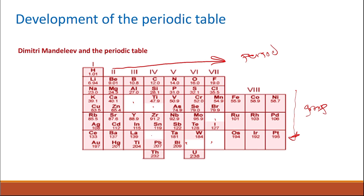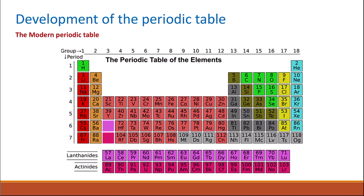When new elements were discovered, they fitted well into the gaps that Mendeleev had left in his table. The discovery of isotopes in the early 20th century also confirmed that Mendeleev was correct not to place elements strictly in order of atomic mass, since some isotopes had different atomic masses but similar properties. The key difference in Mendeleev's table was that he took into account the properties of the elements in addition to their atomic mass.